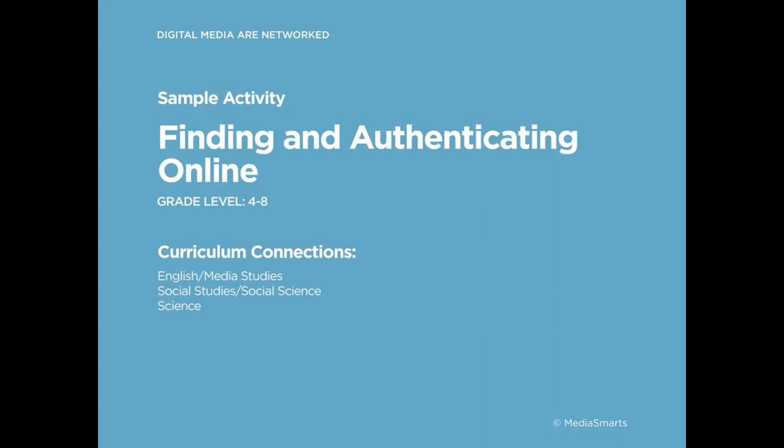Digital media lets users interact with peers, celebrities, and random strangers all at the same time, which has really important implications when we need to authenticate information, recognize the source's bias and point of view, recognize if we're being marketed to, and assess if we can trust the person on the other end. For each of these activities, we'll look at both how it connects to the curriculum and how you can get more general information on how digital literacy fits in. There is a classroom guide available from Media Smarts that you can use for that.